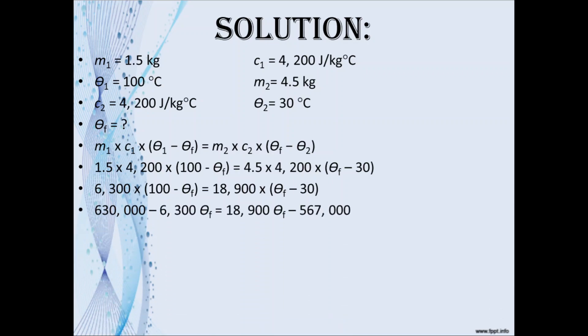Next we expand brackets. So 6300 times 100 gives you 630,000, and then minus 6300θf equals 18,900θf minus 567,000. Transposing, we'll have 630,000 plus 567,000 equals 18,900θf plus 6300θf.